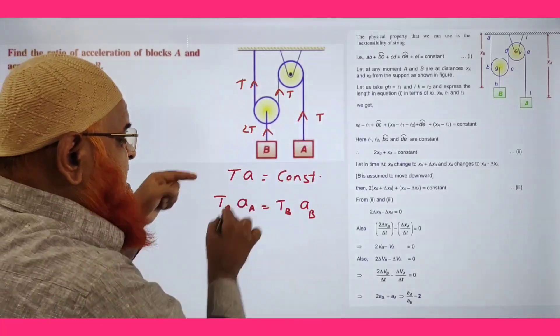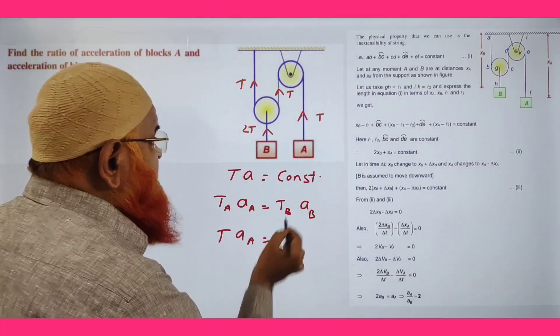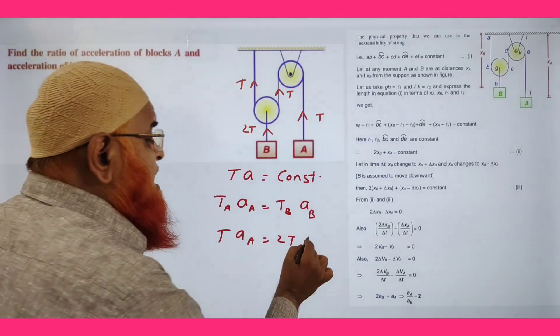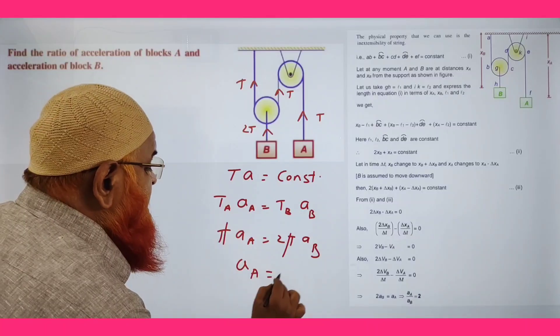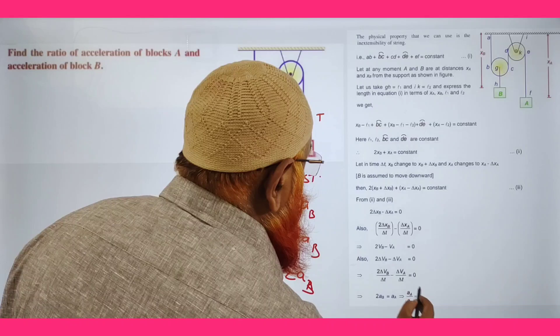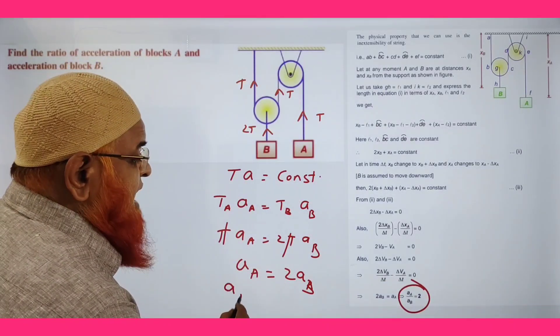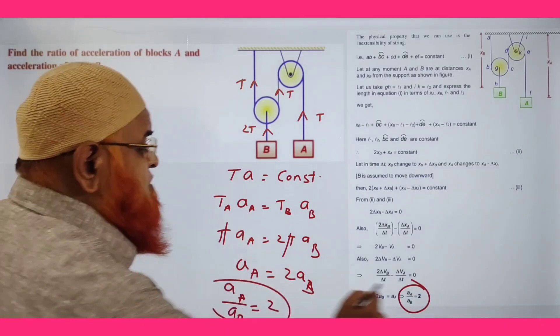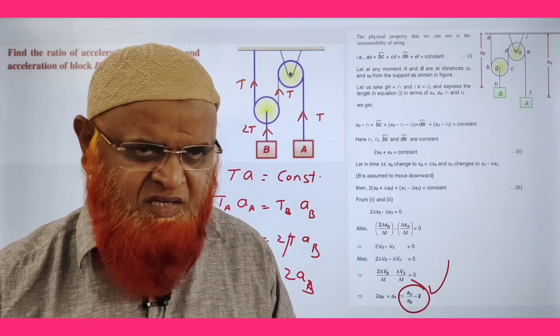TA, tension at A is T, acceleration at A is AA. Tension at B is 2T, acceleration at B is AB. T gets cancelled. Acceleration A is equal to 2 times acceleration B, that's it. That means acceleration of A divided by acceleration of B is 2. So simple and very lovely method this is.